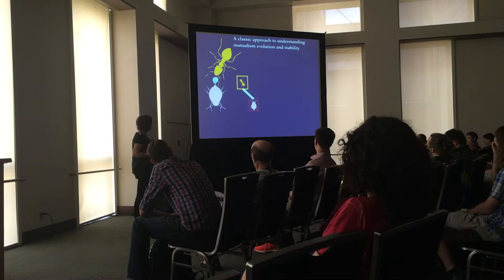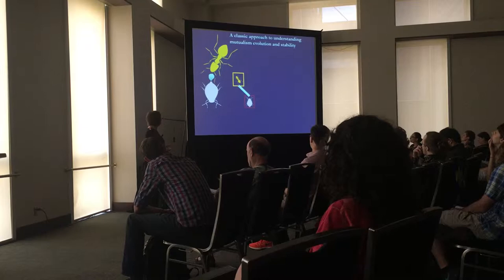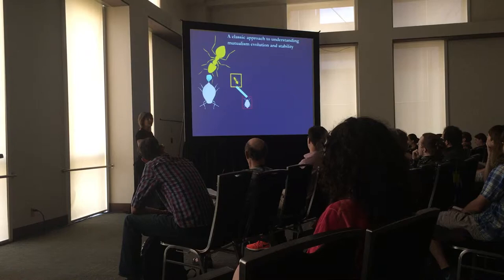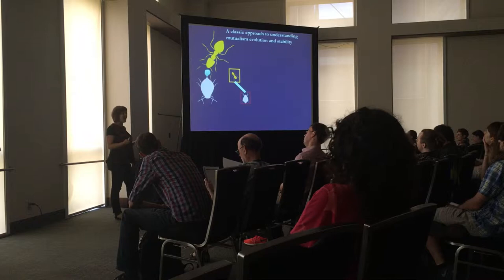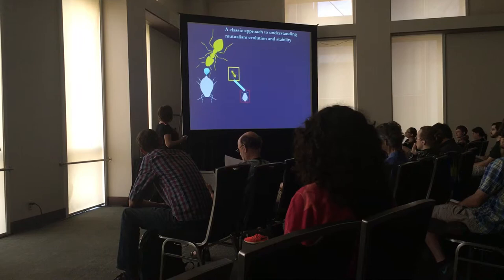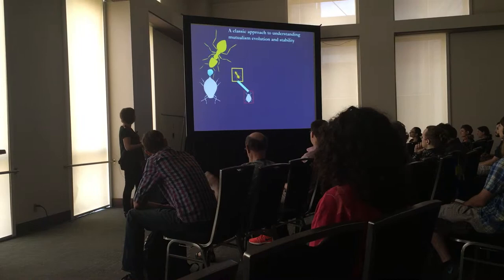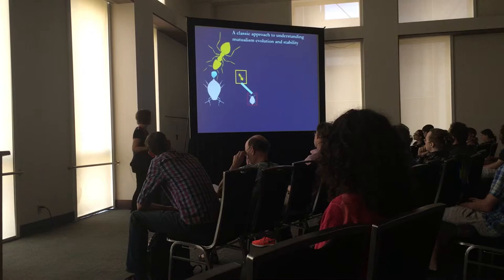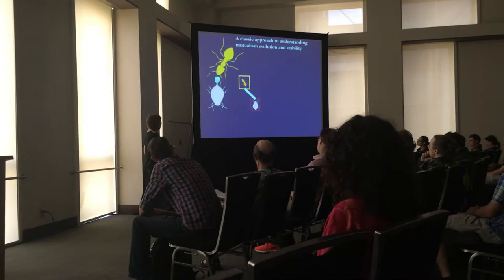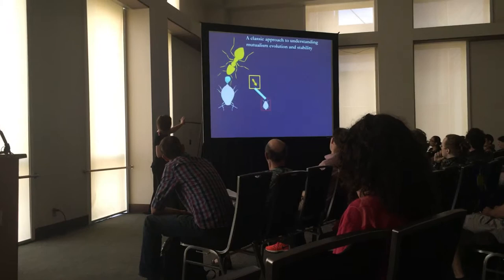These systems of obligate mutualism, where both parties are dependent on each other, have posed a major question in evolutionary theory for a long time. We ask how these systems could evolve and how they can stay evolutionarily stable. A lot of models and experimental work have focused on these systems as one-on-one interactions — one species interacting with another — and the mechanisms we recognize that may stabilize such interactions all revolve around enforcing this link between the two species.